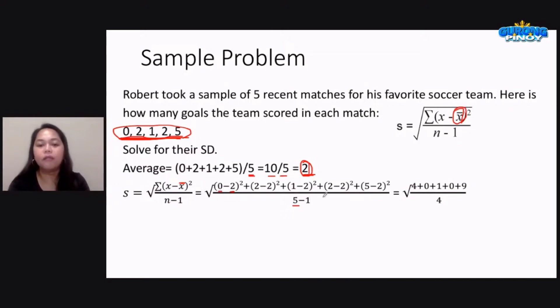Then you have 1 minus 2, so 1 minus 2, that would be negative 1, squared. That's negative 1 multiplied by negative 1, that would give us positive 1. Then you have still 0, katulad lang po siya ng second score natin.